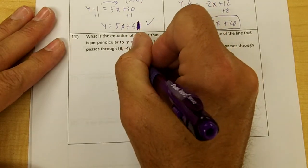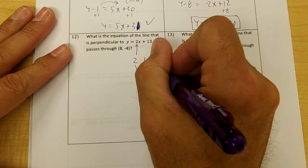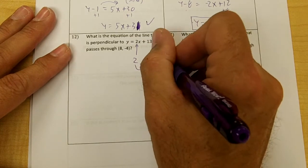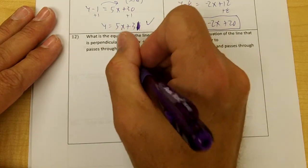So this is my slope, and I want it to be perpendicular, so I'm going to do the opposite reciprocal, which would be negative 1 half. So this is going to be my slope, this is going to be my x, and this is going to be my y.